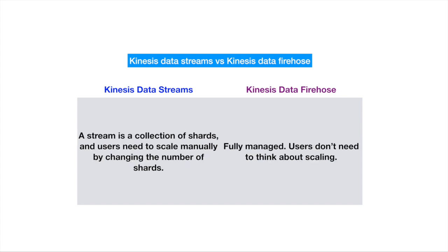Kinesis Data Streams is a collection of shards, and users need to scale manually by changing the number of shards. Whereas Kinesis Data Firehose is a fully managed service — users don't need to think about scaling, as it scales automatically when needed.